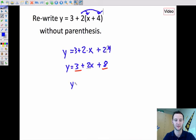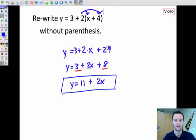So y equals 11 plus 2x. And that is simplified or rewritten without the parentheses and then simplified as far as it can possibly go.